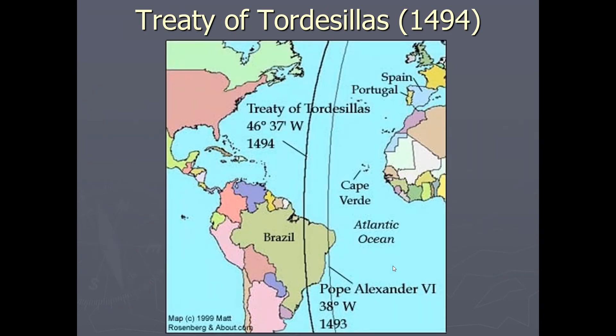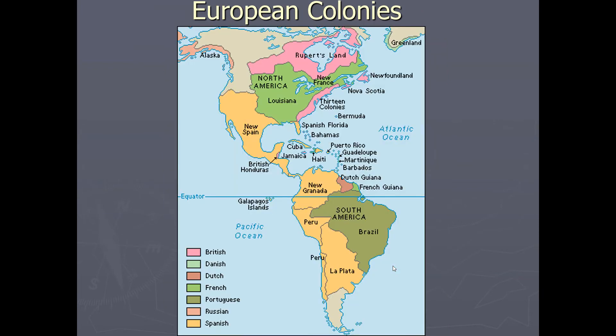The Treaty of Tordesillas in 1494 split Spain and Portugal's territorial findings, which is one of the main reasons why Brazil is predominantly Portuguese. A map of European colonies before the French and Indian War — before 1754 — shows their distribution across the Americas.